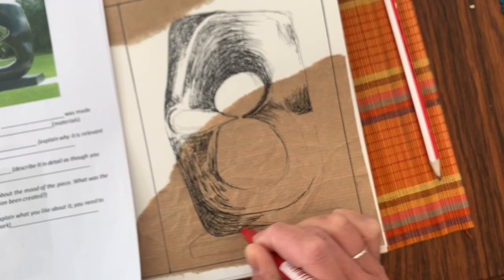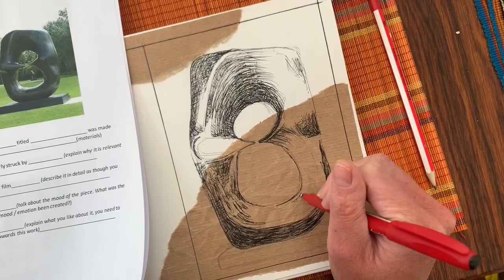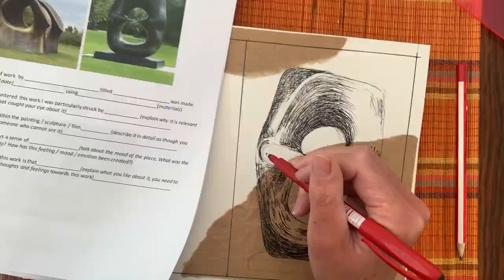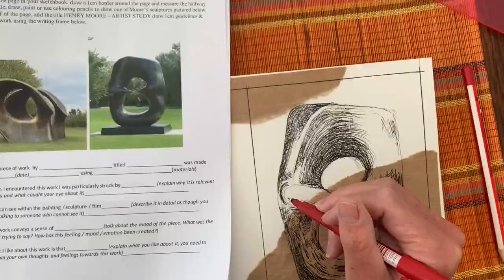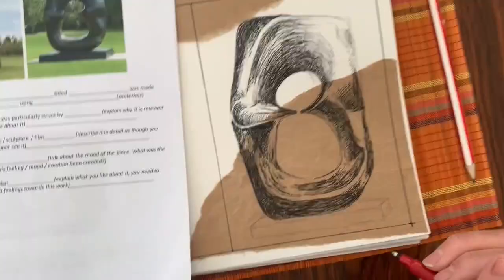The best way to show lighter tones is to not touch the paper at all. Another useful tip is to make sure you're not outlining with heavy dark outlines, especially on the lightest areas of the sculpture.